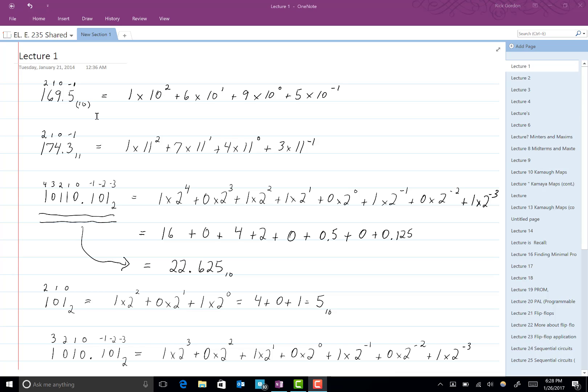Let's look at another example. If we had 174.3 base 11, then this would mean, again, we start at the point. In every case now, we're going to start at the point and number the positions to the left starting at 0: 0, 1, 2, and then the positions to the right starting at negative 1. So we have 1 times the base, which is 11 this time, to the 2 power. 1 times 11 to the 2 power, plus 7 times 11 to the 1 power, plus 4 times 11 to the 0 power, plus 3 times 11 to the negative 1 power.